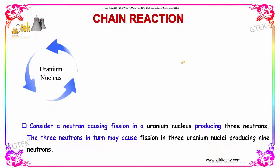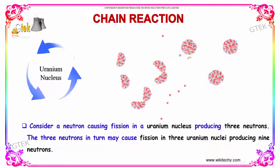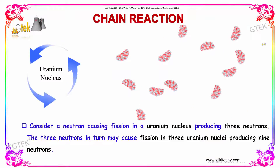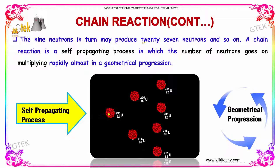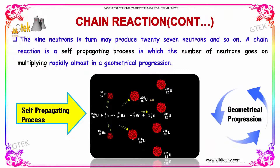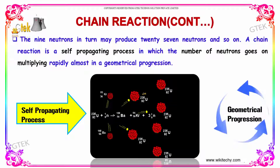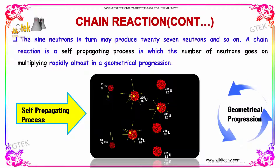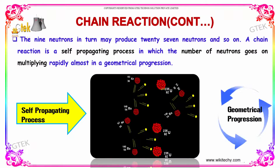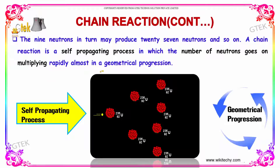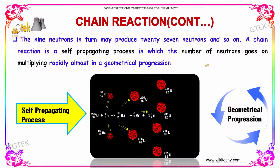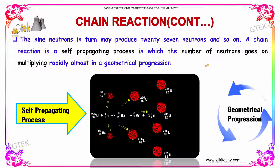It is producing nine neutrons, as you are able to see here. The nine neutrons in turn may produce 27 neutrons, and so on. A chain reaction is a self-propagating process in which the number of neutrons goes on multiplying rapidly, almost in a geometric progression. So one becomes three, three becomes nine, nine becomes 27 — a geometrical progression.